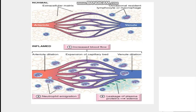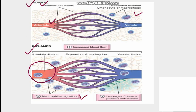In normal tissue you can see occasional lymphocytes in the extracellular matrix. During inflammation, vasodilation occurs and neutrophils begin exiting the blood vessels — this is known as neutrophilic immigration. There is also leakage of plasma proteins, which leads to edema. Edema is the leakage of fluid from the intravascular component into the extravascular component.